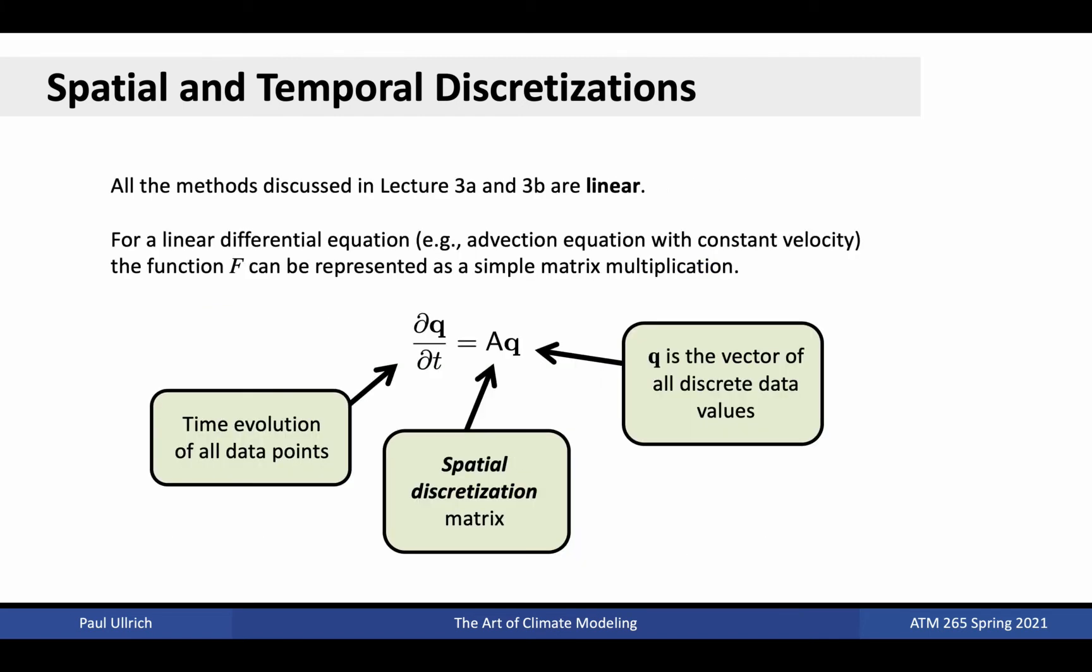Notably, all of the methods we have discussed in lectures 3a and 3b are linear discretizations when applied to a linear differential equation. That means that if applied to this linear differential equation, such as the advection equation with constant velocity, the function F could be represented as a simple matrix multiplication. That is, the time evolution of a vector of data values would equal a matrix A times a data vector. This matrix is known as the spatial discretization matrix.